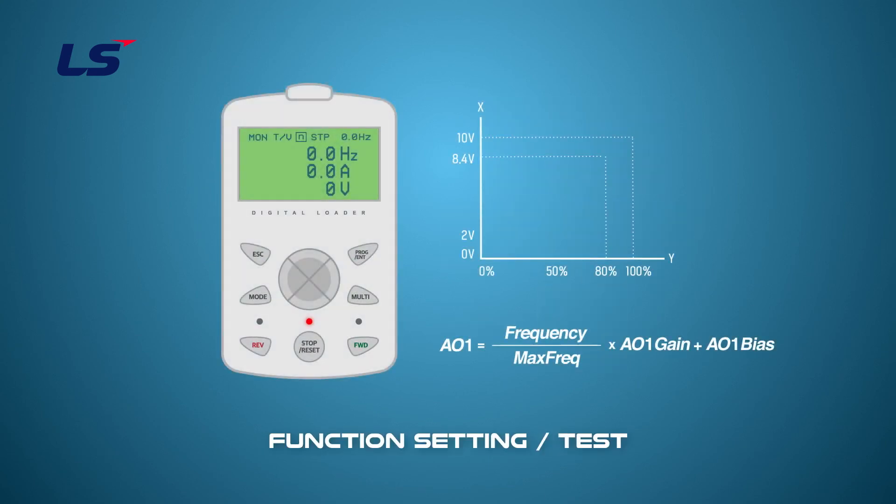We'll do an analog output test next time. Because bias is set to 20% and gain is set to 80%, the graph is drawn according to the output frequency as shown on the screen.